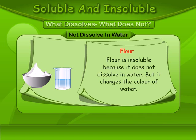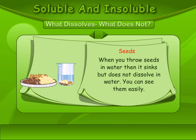Flour: Flour is insoluble in water because it does not dissolve in water, but it changes the color of the water. Seeds: When you throw seeds in water, they sink but do not dissolve. You can see them easily.